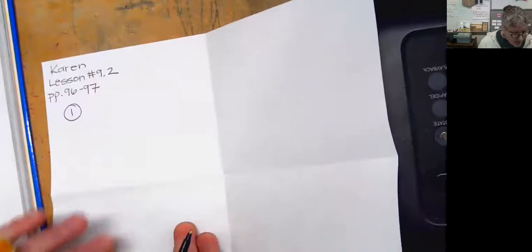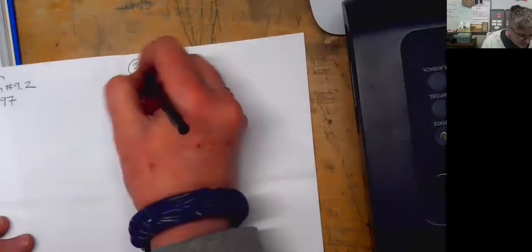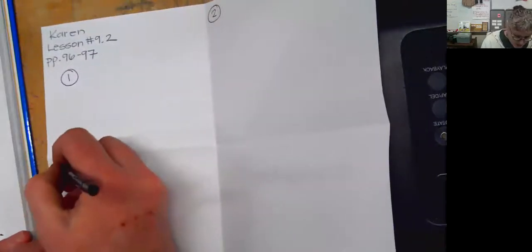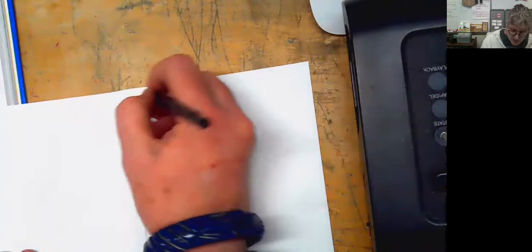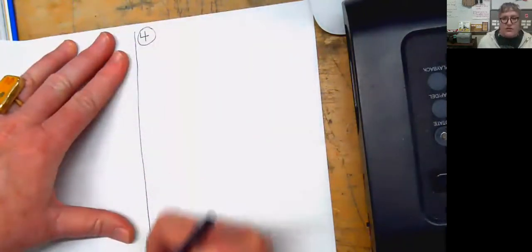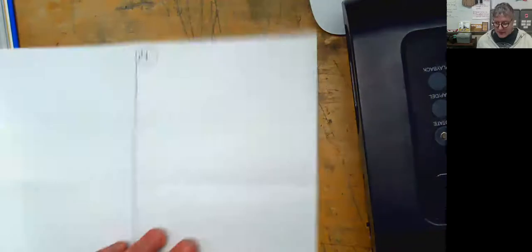We're going to start out with number one right here, and then number two over here. We have some practice problems — one, two, three, and four. We're drawing three different angles, so on four we can just take up this whole section on the back, giving ourselves plenty of room.